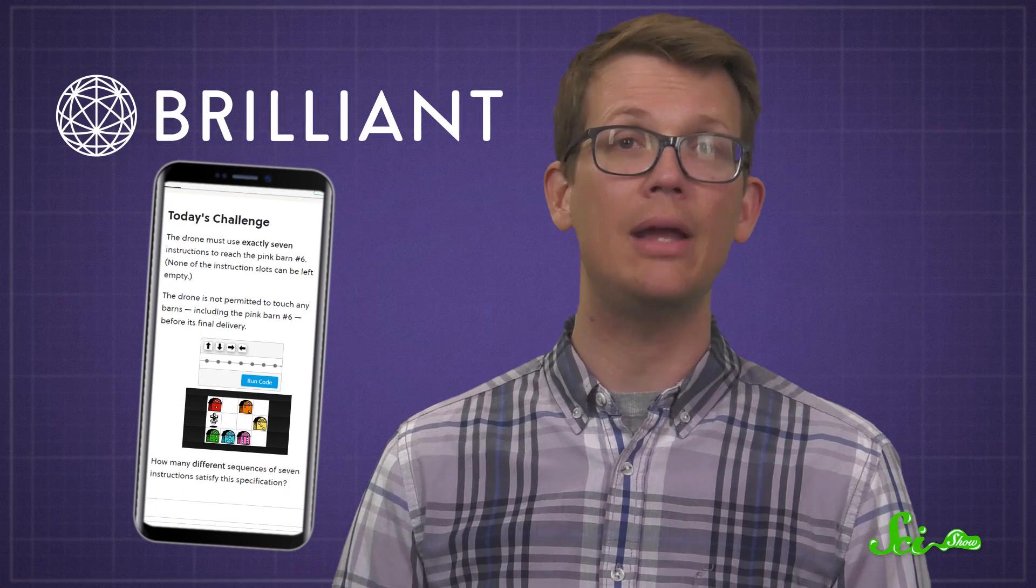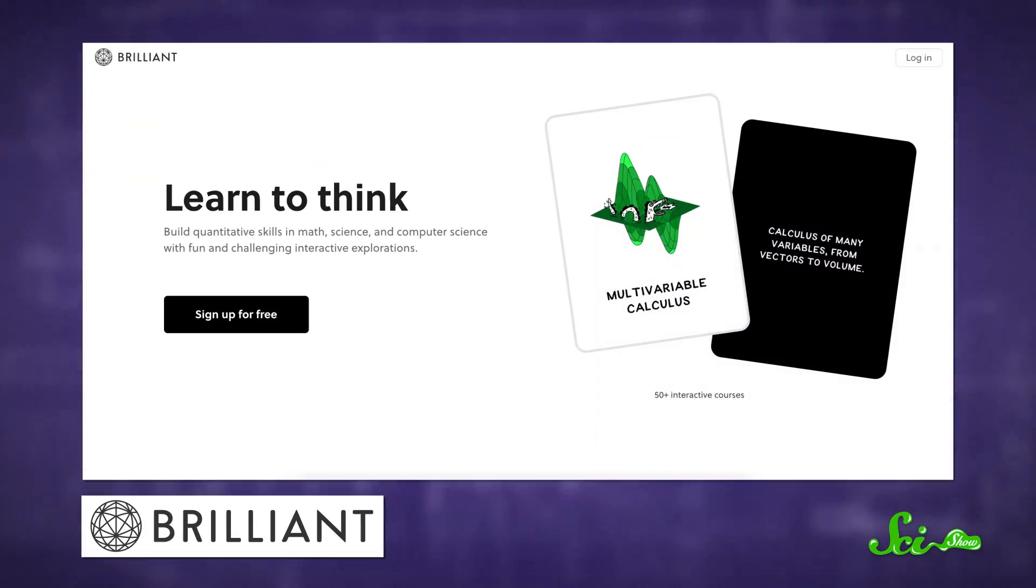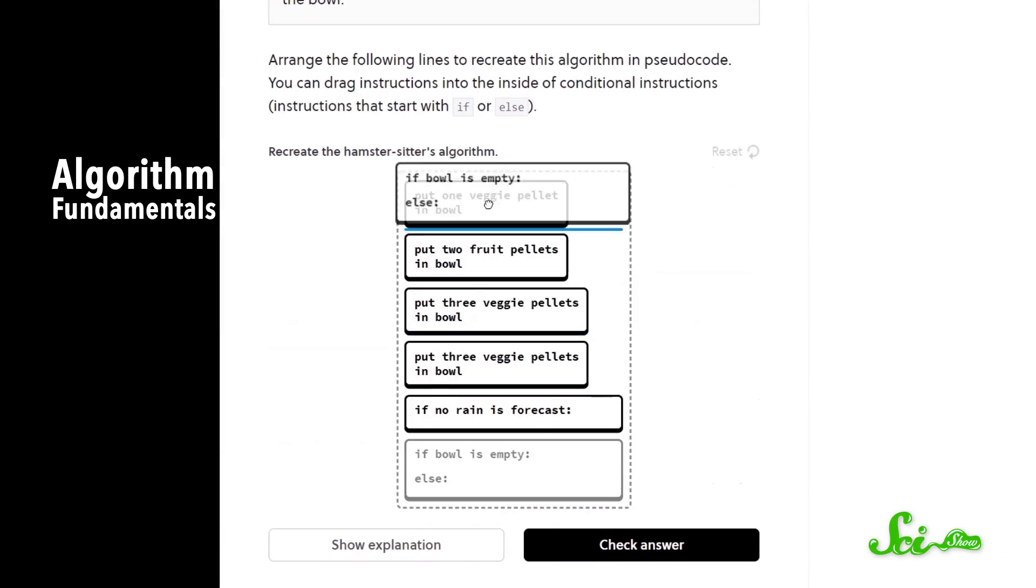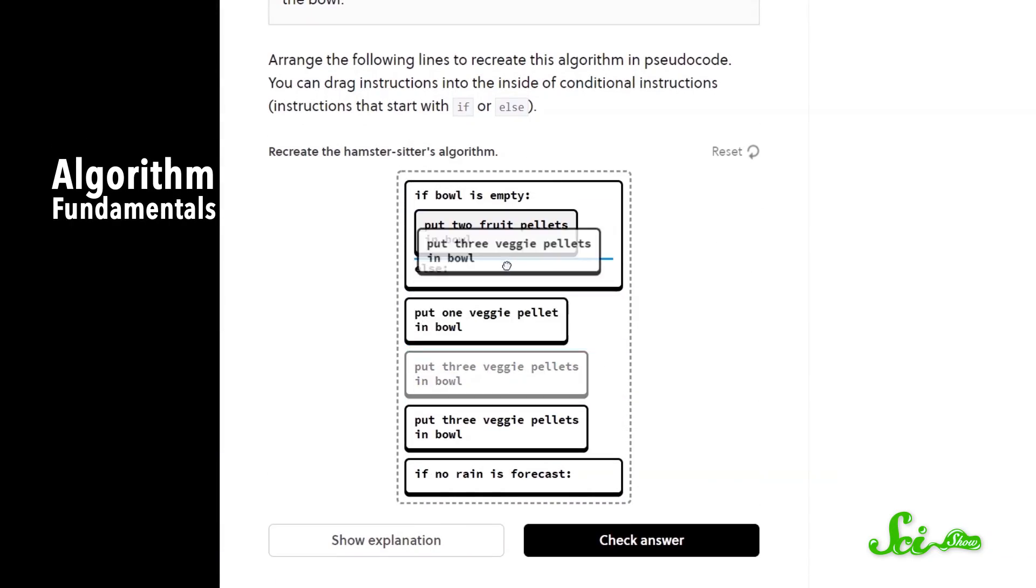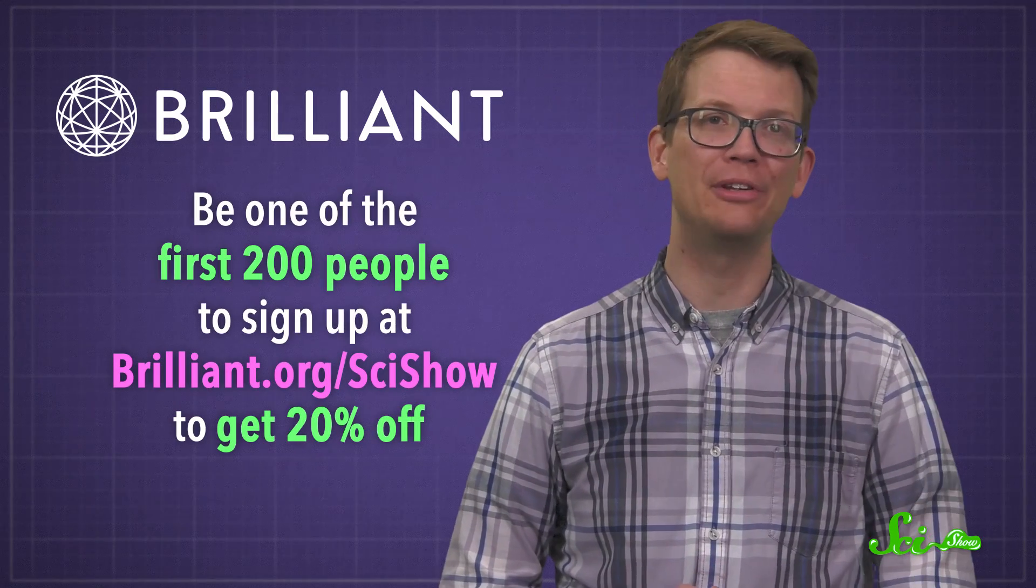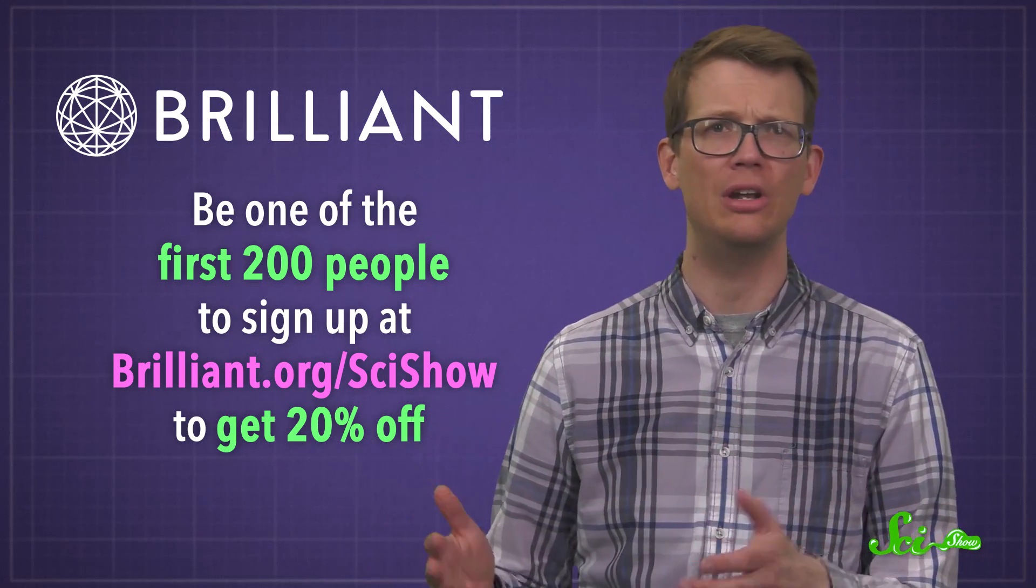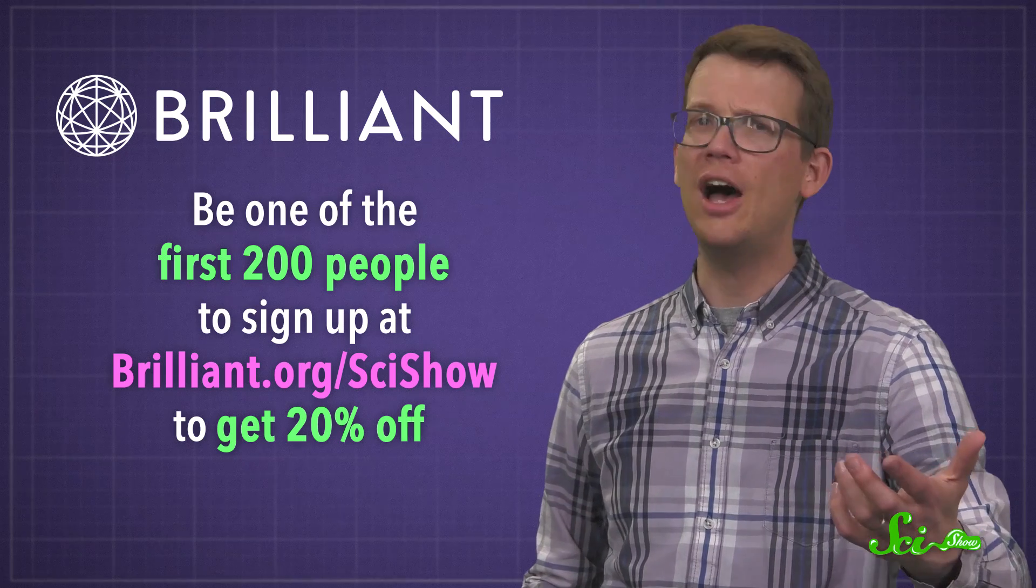If you want to keep learning, why not make a goal-directed movement over to Brilliant? Brilliant is a problem-solving-based website and app with a hands-on approach, with over 60 interactive courses in math, science, and computer science. And if we've got you thinking right now, you know, I really do want to learn how to pilot a giant robot, well, they might be a good place to start. Like their course on algorithm fundamentals, which is all about getting computers to do what you want. Sound close? Right now, the first 200 people to sign up at Brilliant.org slash SciShow will get 20% off the annual premium subscription. So go forth, and design your Jaegers!